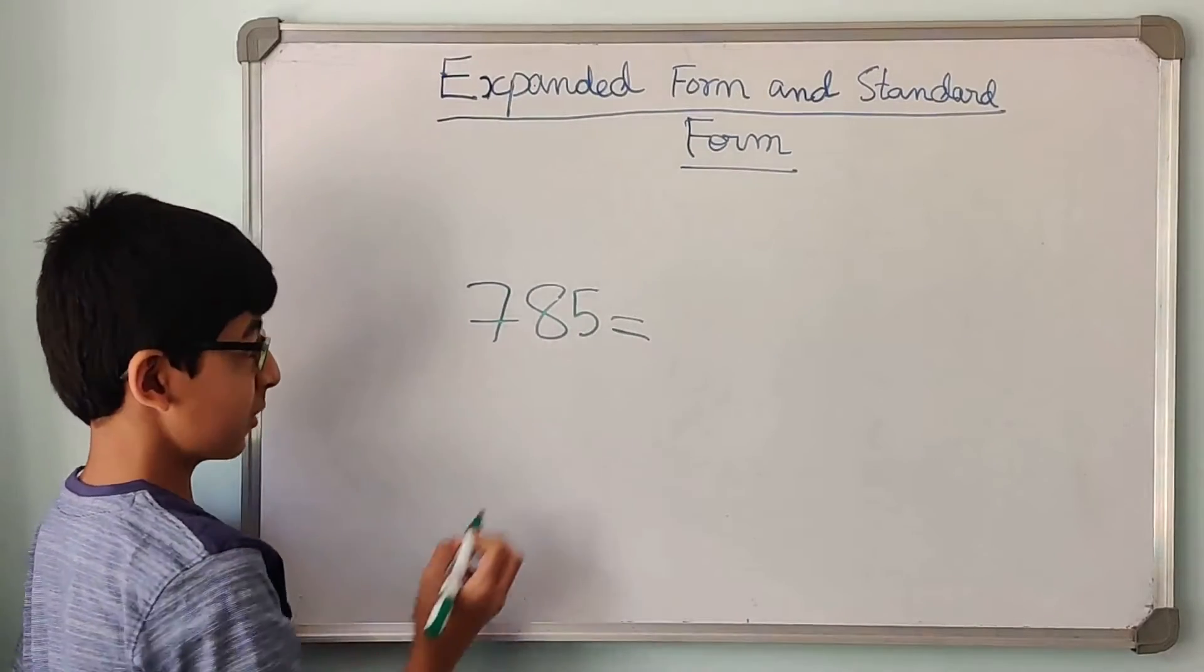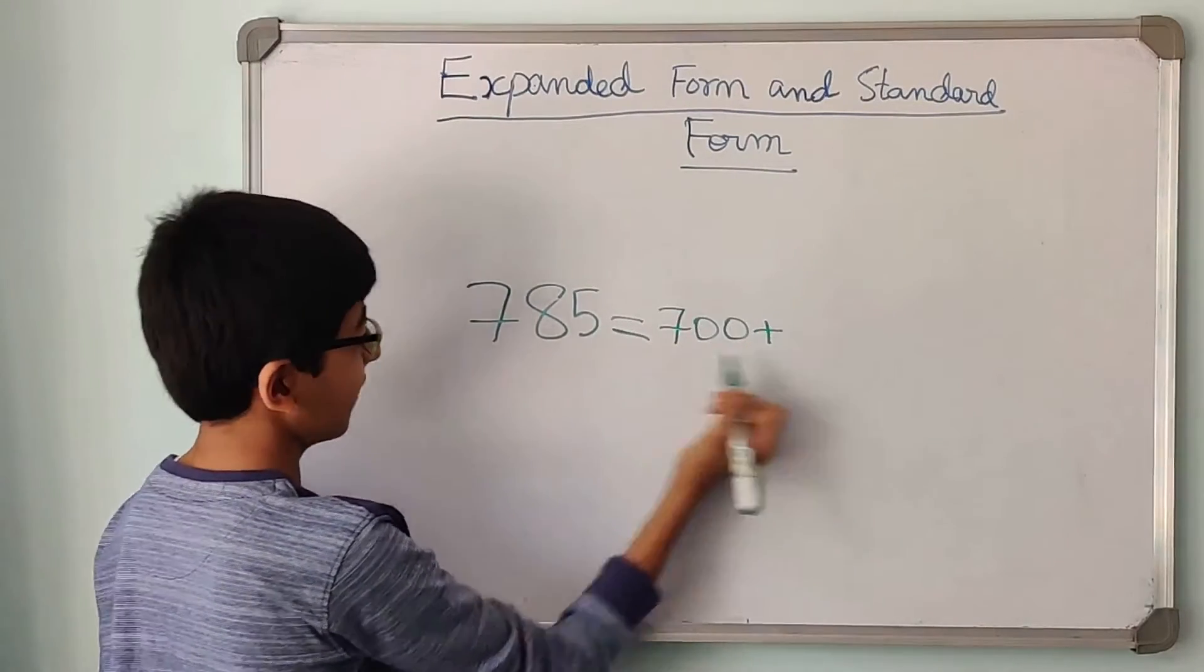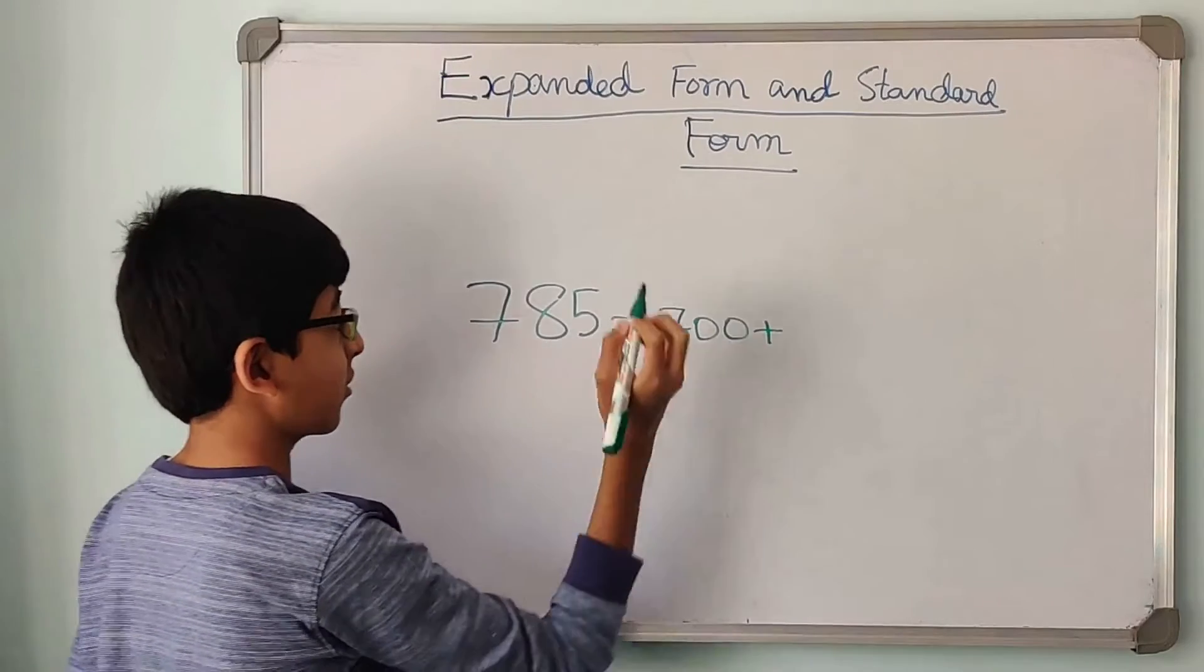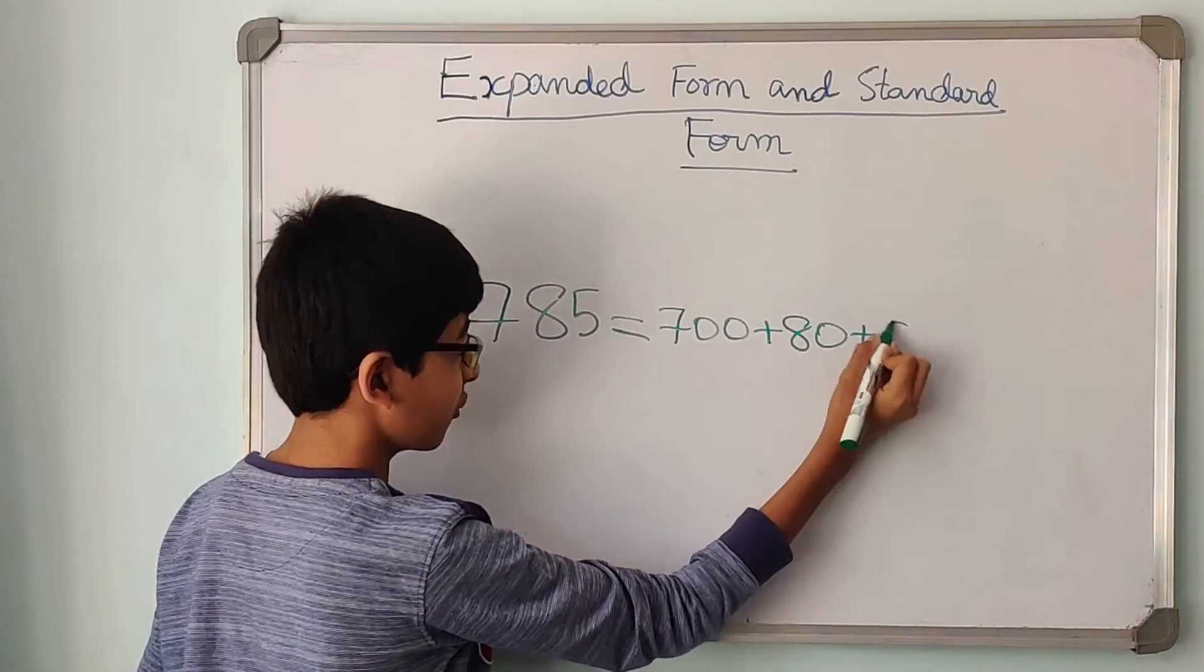The place value of 7 is 700 plus 8. The place value of 8 is 80 plus 5.